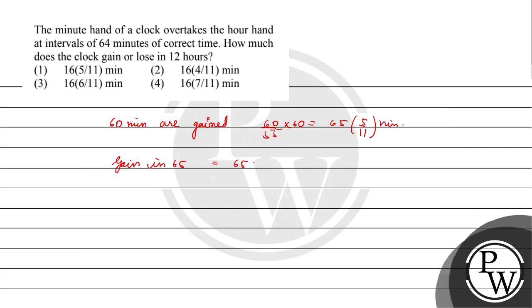So 65 into 5 by 11 minus 64. That will further give you 16 by 11 minute gain in 12 hours.